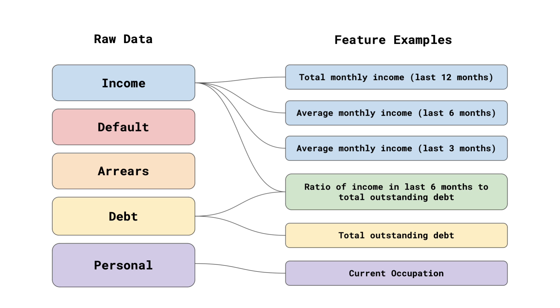During feature engineering, you will create many features from each of these sources, using different aggregations over different time periods. Take the three features created using income. We can expect them to be very similar. We could also expect them to be predictive of default, but they would all capture the same underlying relationship between income and default. This means that once we have an income feature in our model, including an additional one would not improve the model's accuracy.